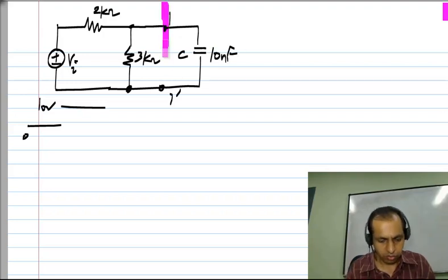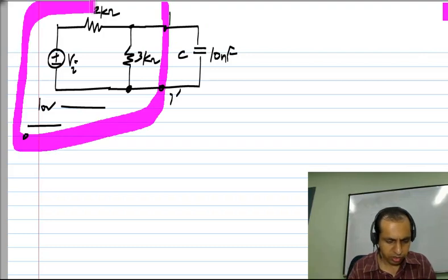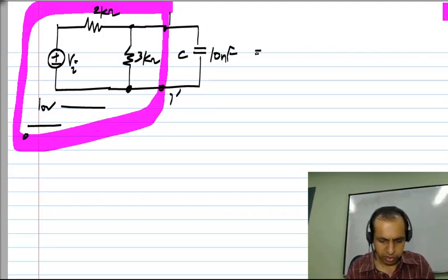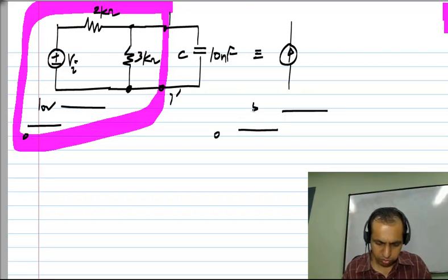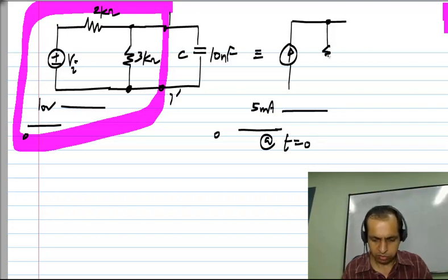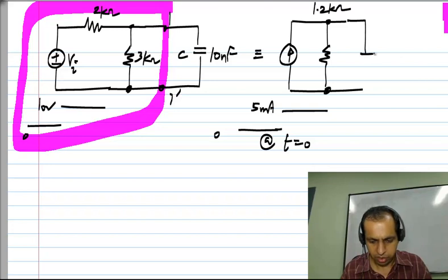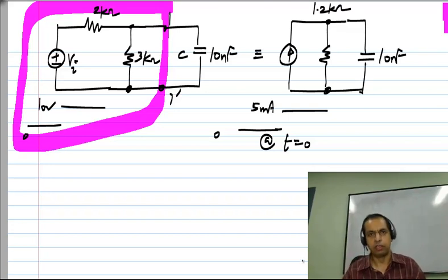Then the Norton equivalent of this part of the circuit will be the current, which is the short circuit current and it will jump from 0 to 5 milliamps at T equals 0. Across it will have a Norton resistance, which is the same as the Thevenin resistance and equals 1.2 kilo ohms, and we have a 10 nanofarad capacitor across it.